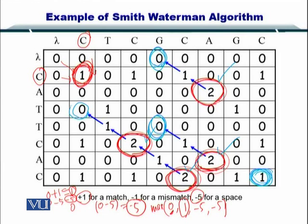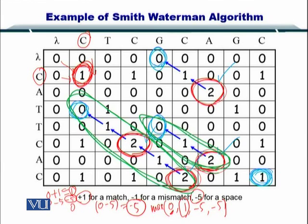So essentially what this tells you is that there are three possible alignments—three possible local alignments that exist in this matrix.